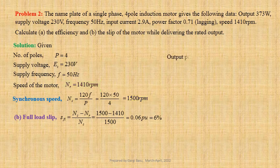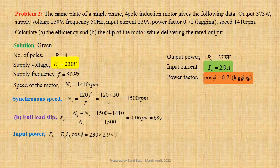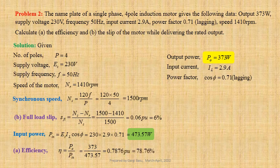Given output power P equals to 373 watts. Input current Il equals to 2.9 ampere. And power factor cos phi equals to 0.71 lagging. For single phase induction motor, input power Pin equals to Et into Il cos phi. Using values we get 230 into 2.9 into 0.71, that gives us 473.57 watt. Efficiency of the motor eta equals to Po divided by Pin. Using values we get 373 divided by 473.57, that gives us 0.7876 per unit or 78.76 per cent.